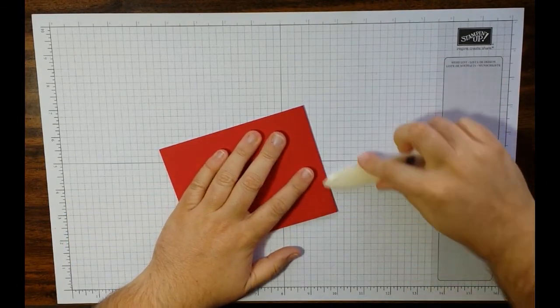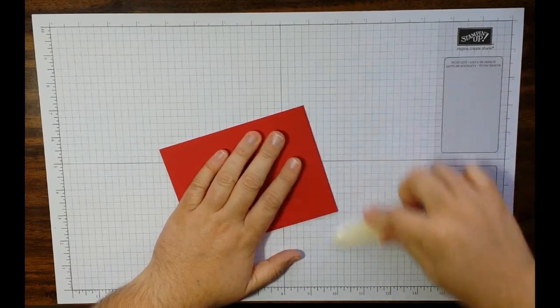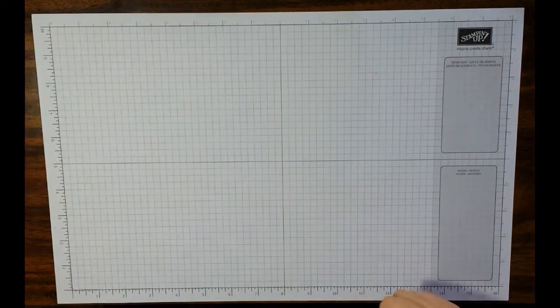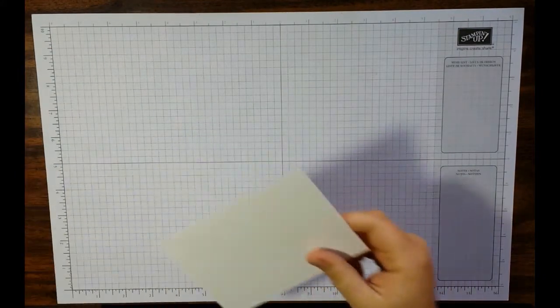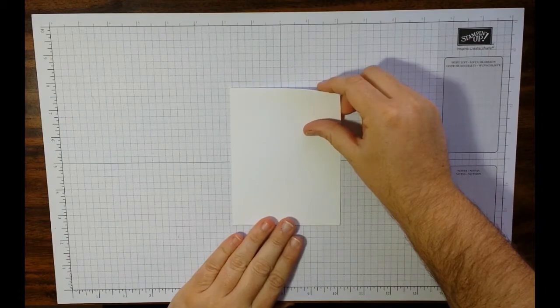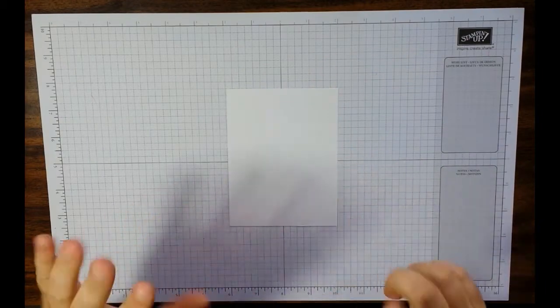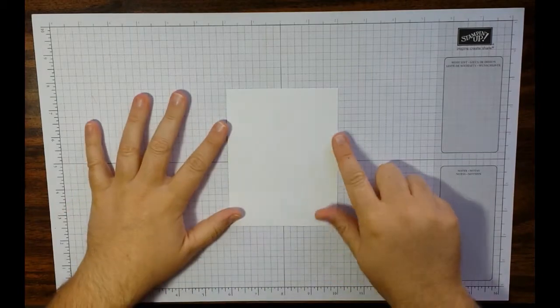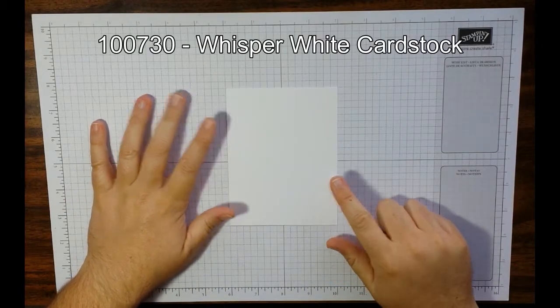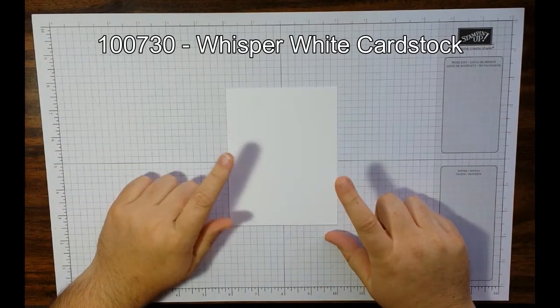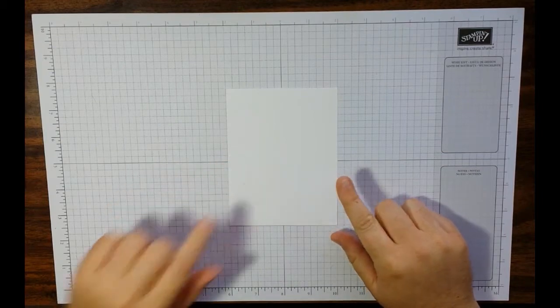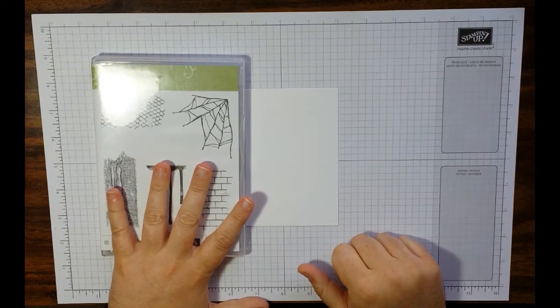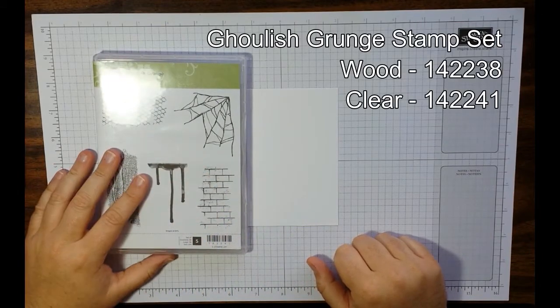Score it at five and a half. Grab yourself a bone folder. Bone folder, not necessary, but if you like them, they're awesome. Alright, that's your card base. Set that aside. Then, you are going to need a piece of Whisper White that is four by five and a quarter.